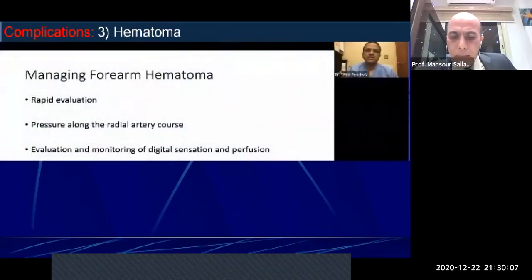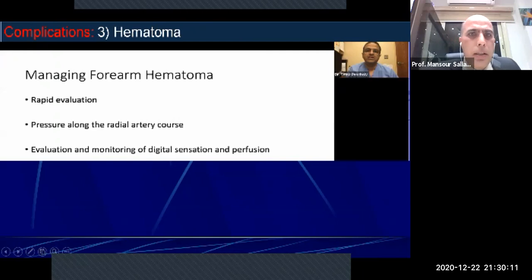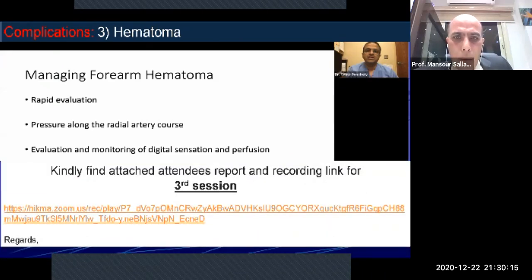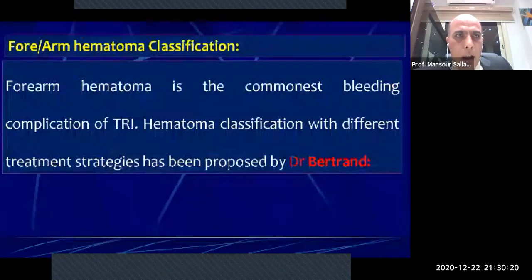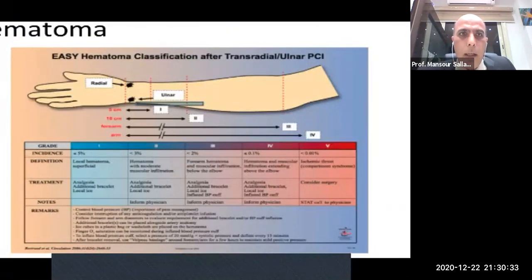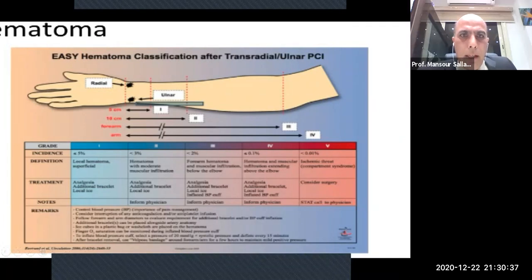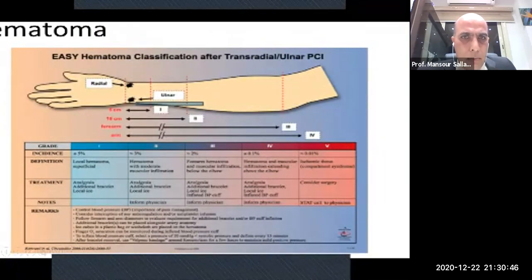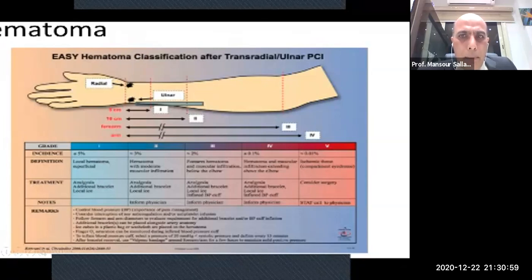The third complication is hematoma, discussed in detail by Dr. Samir Bansholy in the third session — the link will be posted on the Al-Azhar Radial Course Facebook page. The right arm hematoma is the commonest bleeding complication of transradial intervention. Hematoma classification proposed by Dr. Bertrand has five categories: Grade 1 confined to puncture site within 5 cm; Grade 2 extends approximately 10 cm; Grade 3 extends below the elbow; Grade 4 extends above the elbow; Grade 5 is compartment syndrome.